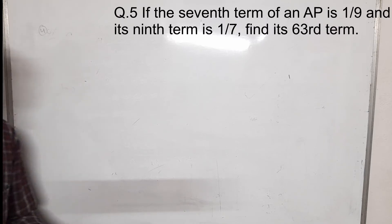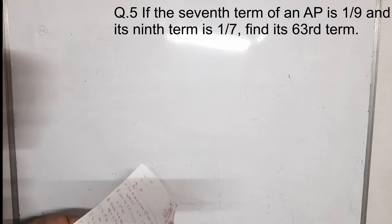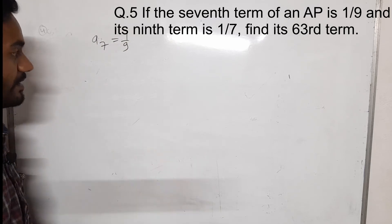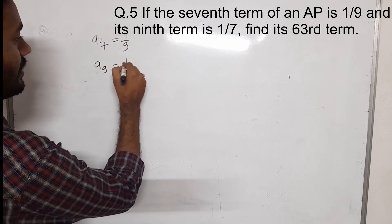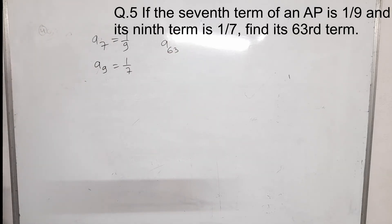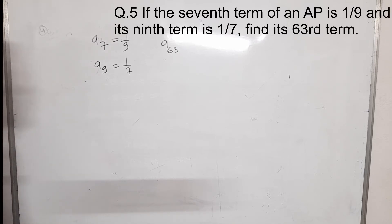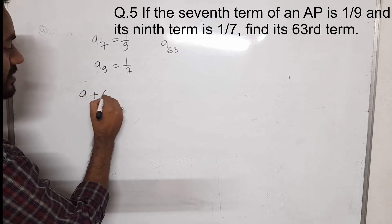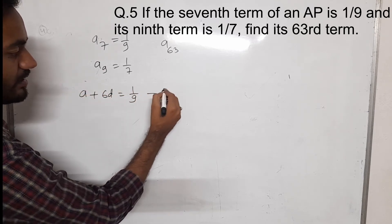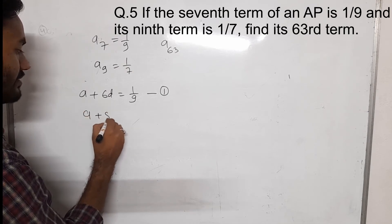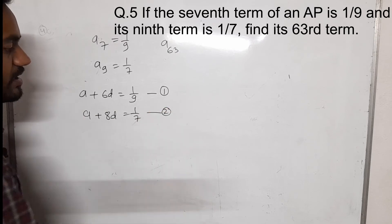Now question number 5: if the seventh term of an AP is 1 by 9 — so A7 is 1 by 9 — and the ninth term is 1 by 7, then we have to find A63. We are given A7 and A9, and we need to find A63. So A7 gives A plus 6D equals 1 by 9 — equation number 1. And A9 equals 1 by 7 gives A plus 8D equals 1 by 7 — equation number 2.